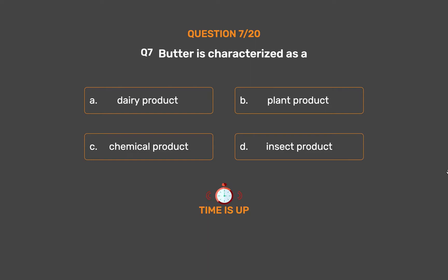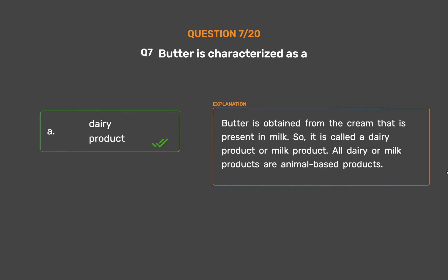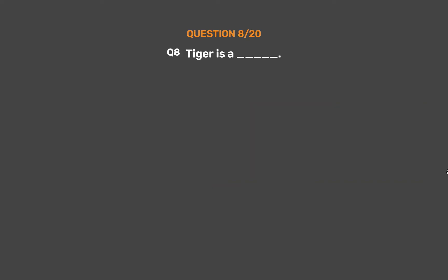The correct answer is Option A, Dairy product. Butter is obtained from the cream that is present in milk. So it is called a dairy product or milk product. All dairy or milk products are animal-based products.